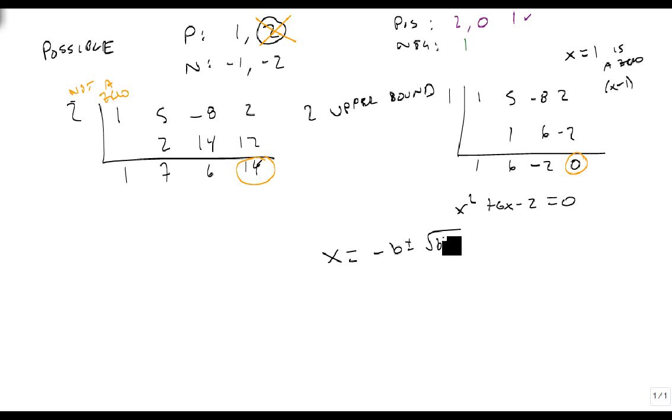So x equals minus b plus or minus the square root of b squared minus 4ac all over 2a. In this particular case, that's x equals minus 6 plus or minus the square root of 6 squared minus 4 times 1 times negative 2, all over 2 times 1.